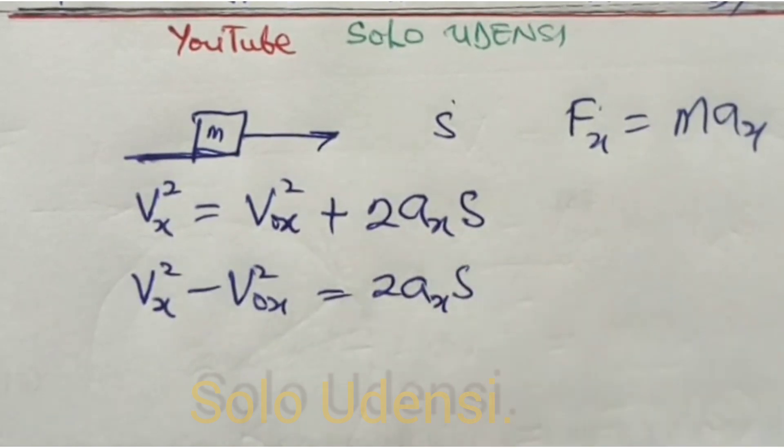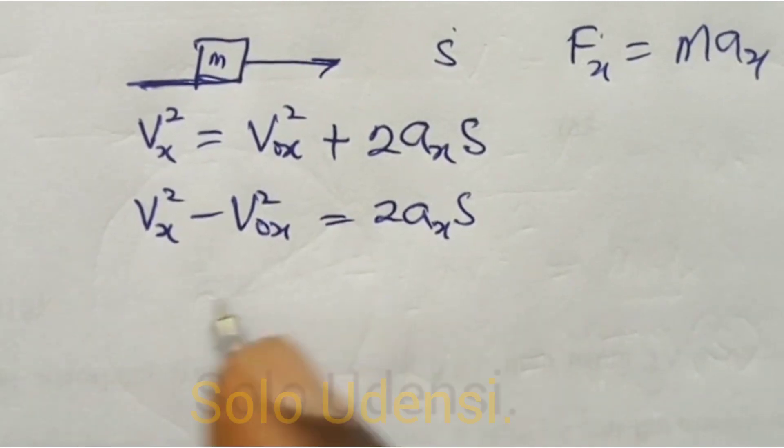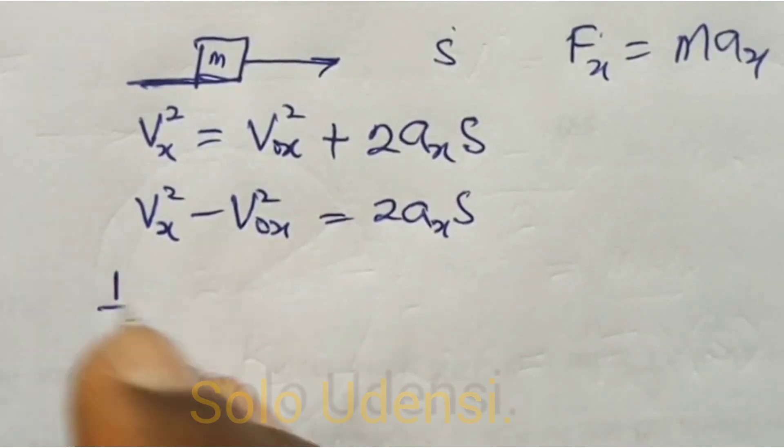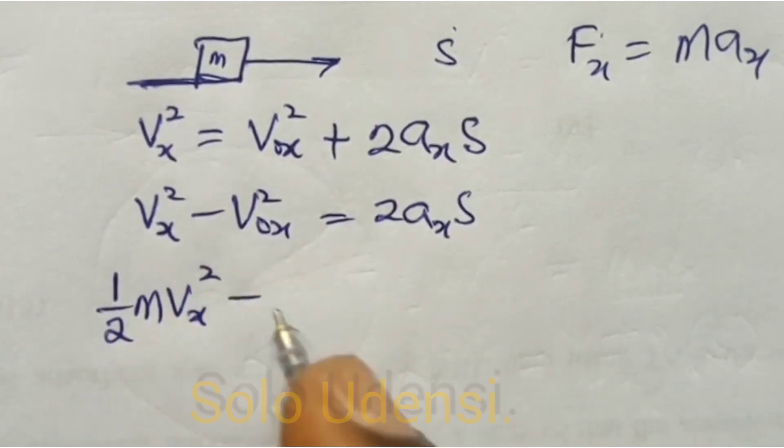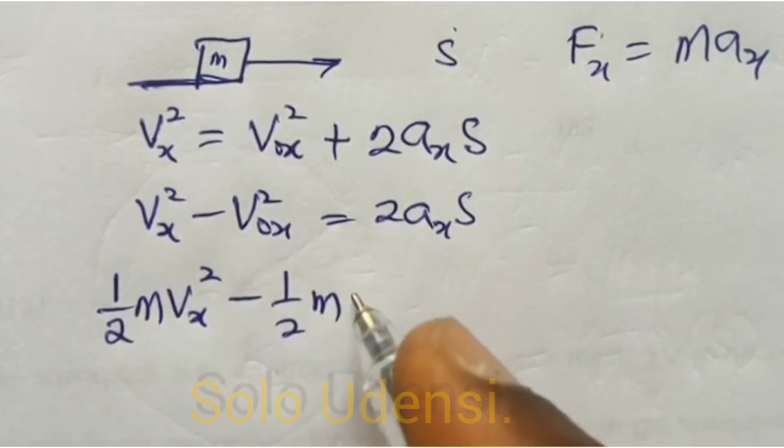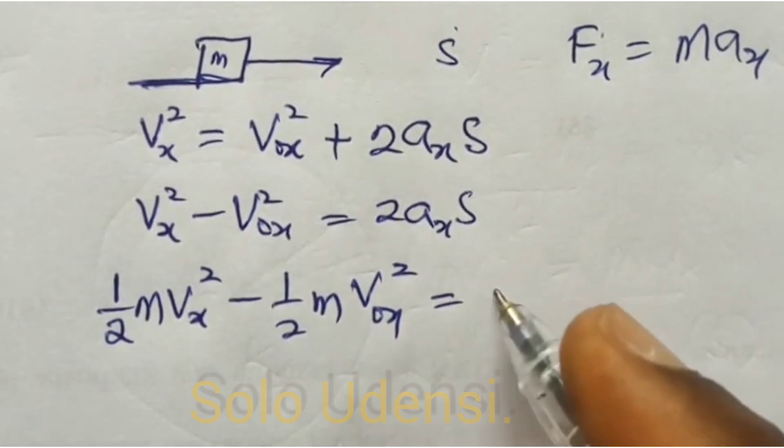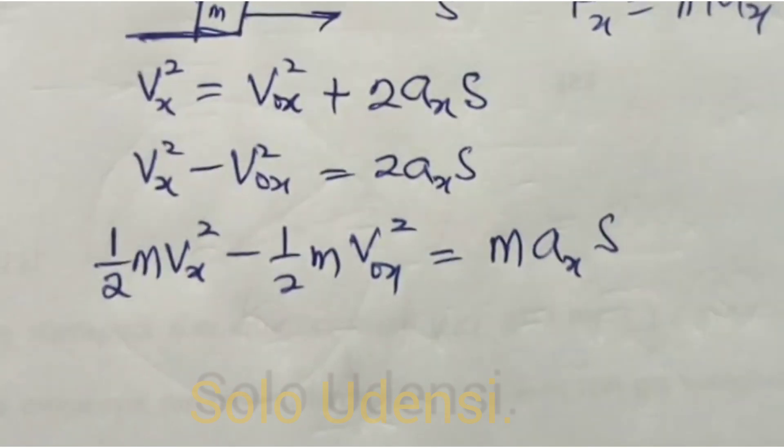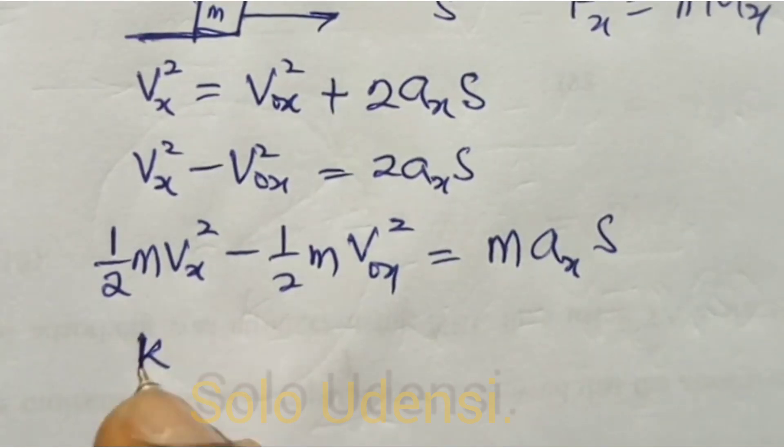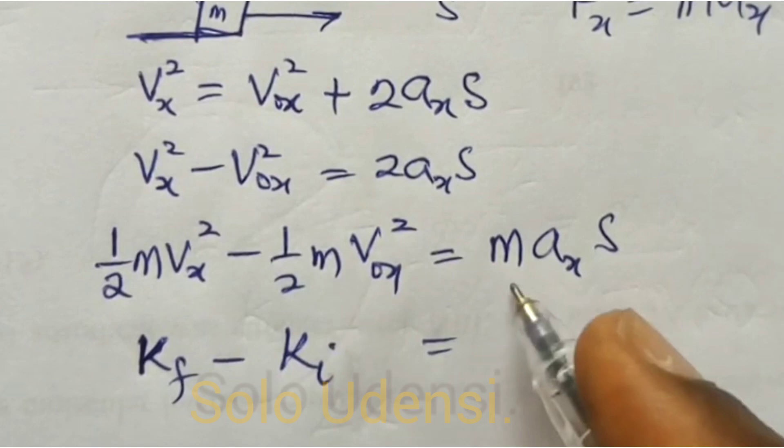If we divide by 2 and multiply by M, we have that ½mVx² minus ½mV₀x² is equal to maxS, if we do it on both sides, so that we know that this is final kinetic energy minus initial kinetic energy.